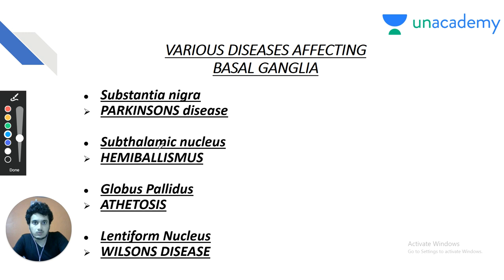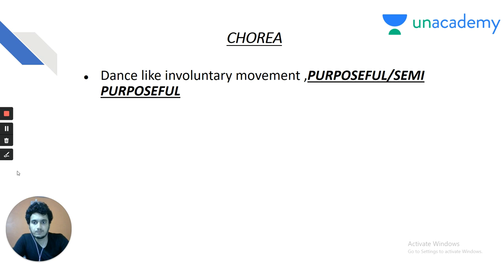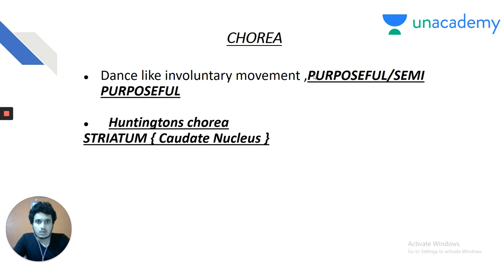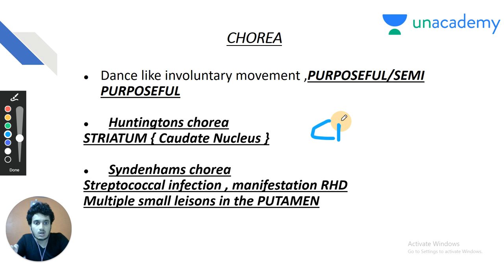This representation has been asked multiple times. Hemiballismus leading to contralateral subthalamic nucleus damage was asked in NEET 2016. Chorea is dance-like, involuntary, purposeful or semi-purposeful movement whereas both athetosis and hemiballismus are purposeless. Huntington's chorea manifests at a young age due to CAG trinucleotide repeats, affecting the caudate nucleus.